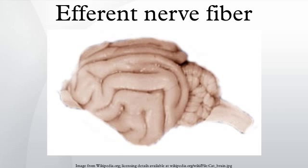The cell body of the motor neuron is satellite-shaped. The motor neuron is present in the gray matter of the spinal cord and medulla oblongata, and forms an electrochemical pathway to the effector organ or muscle.